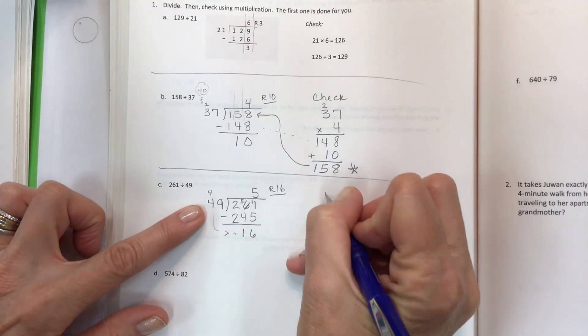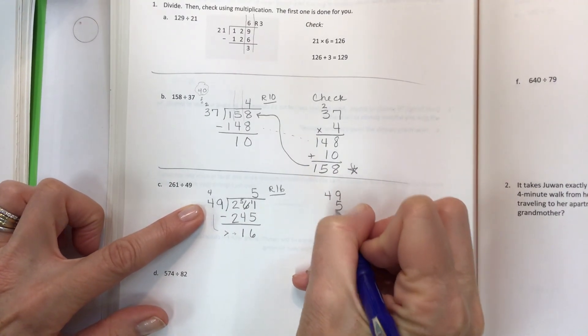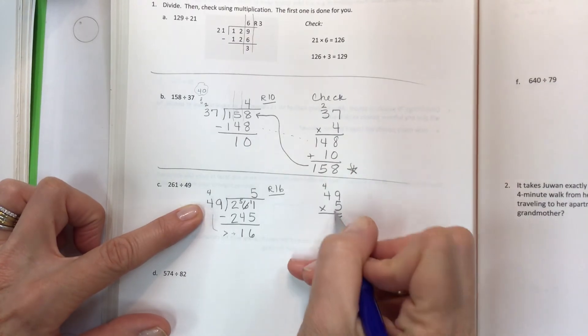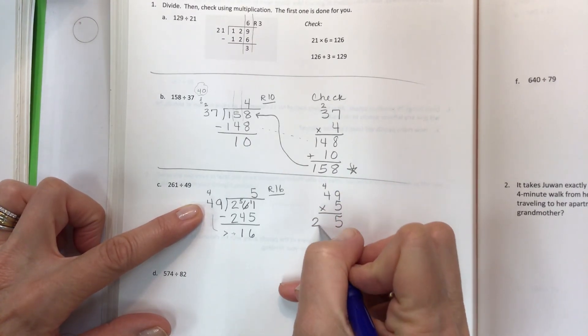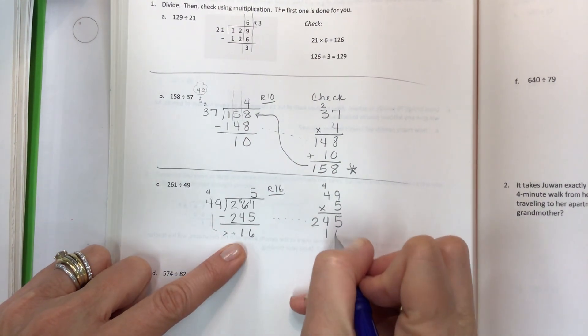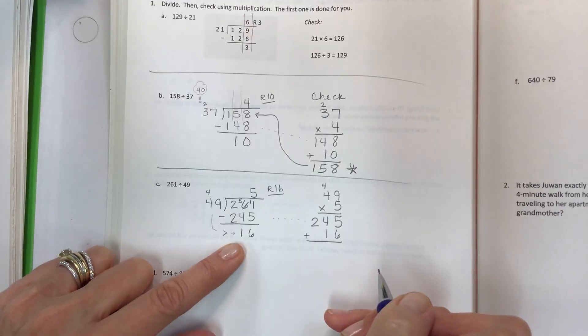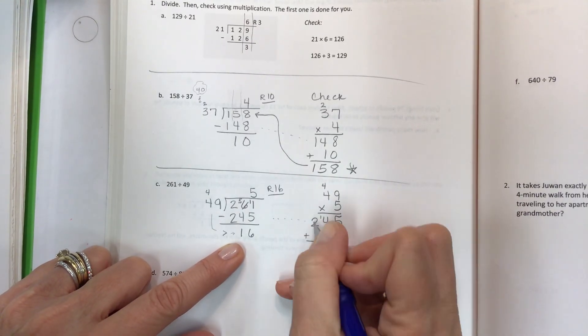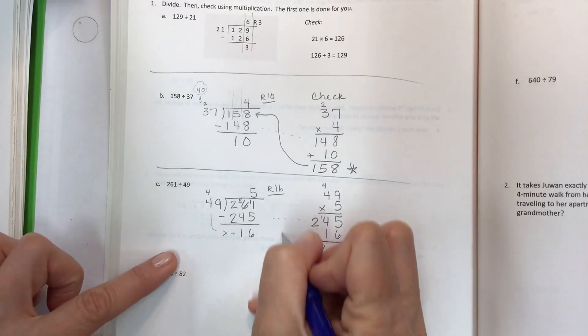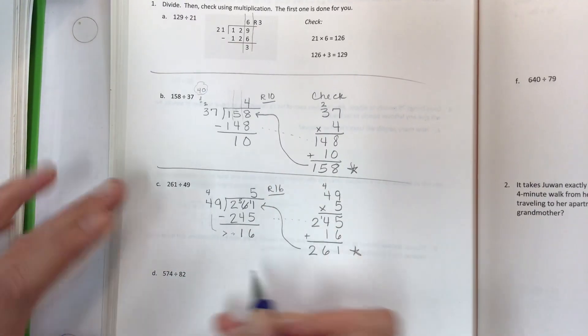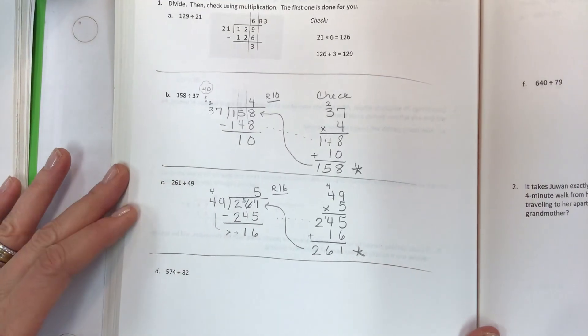Now I'm going to do my check and it's going to be 49 times 5. 9 times 5 is 45. 5 times 4 is 20 plus 4 is 24. You get that 245. Then we have our 16, that is our remainder. We're going to add that. 6 and 5 is 11, 4, 5, 6, 2 comes down. We get 261. Make an active check with your eyeballs, put a little star when you get it right.